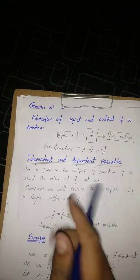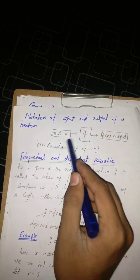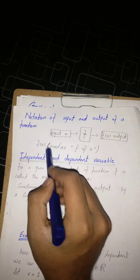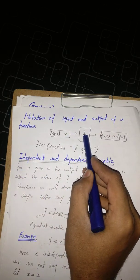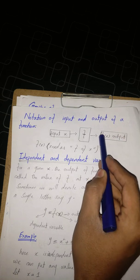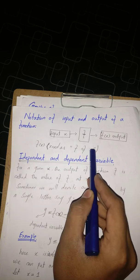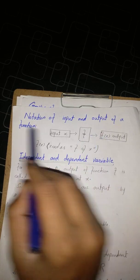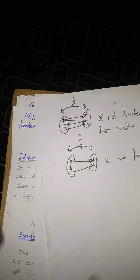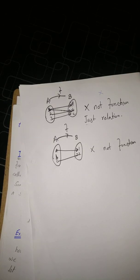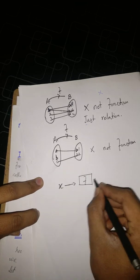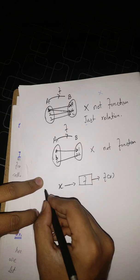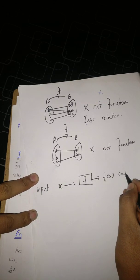Now the notation of input and output: when we put an input value x into a function f, the output is written as f(x), read as 'f of x.' So the input value is x, f is the function, and the output value is f(x). That is the notation used for input and output.